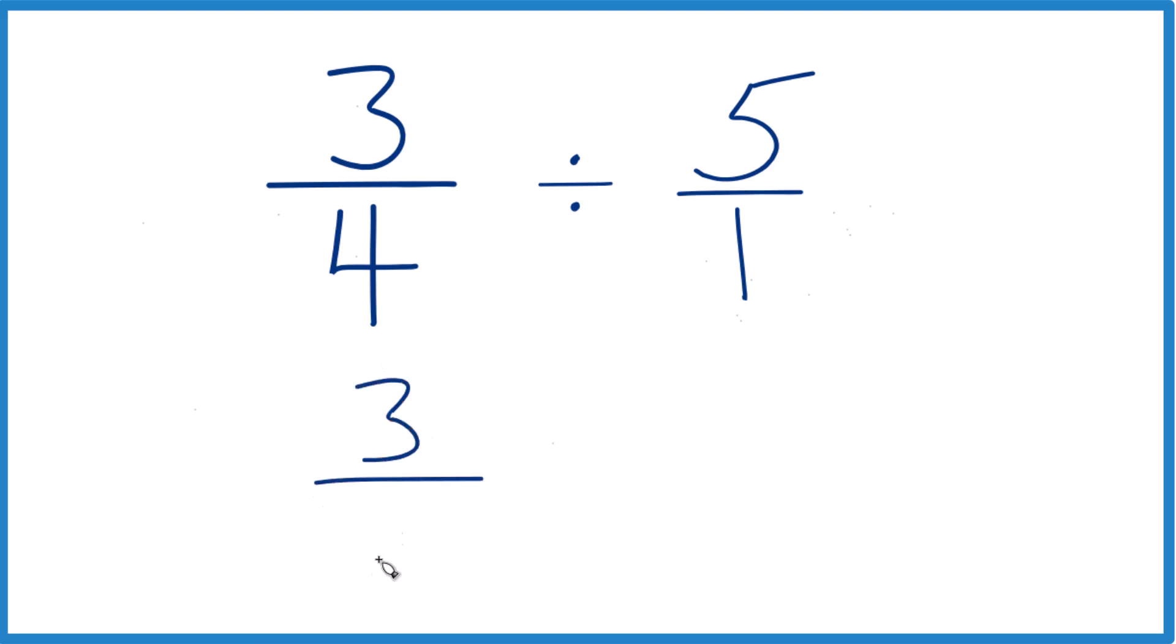Take our 3 fourths here, and instead of division, we're going to multiply by the reciprocal of 5 over 1. Move the 5 to the bottom, the 1 to the top. So we have 1 over 5. That's 1 fifth.